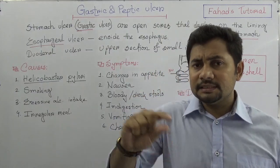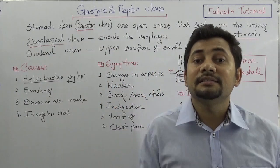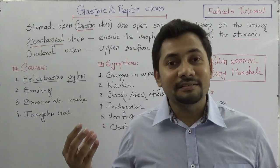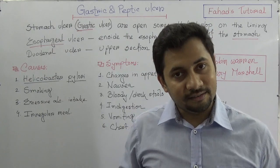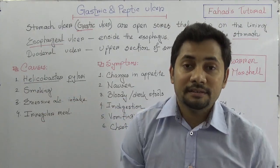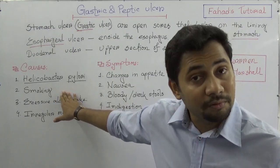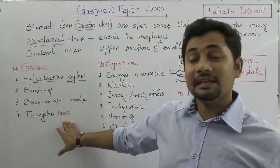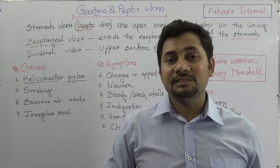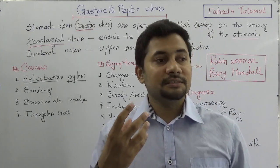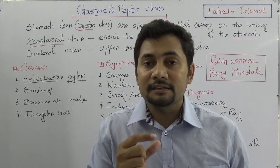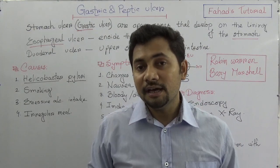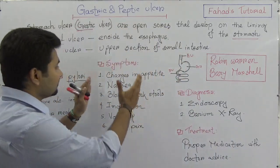This bacteria develops inside the stomach, esophagus, or duodenum and creates the ulcer. Based on the location, we name it duodenal, gastric, or esophageal ulcer. Helicobacter pylori is the main cause of peptic ulcer. Secondly, smoking is a common cause. Excessive alcohol intake, irregular meals, spicy meals, oily meals, and stimulating foods like coffee are also main reasons. Mostly, irregular meals, spicy meals, and Helicobacter pylori are the main reasons for peptic ulcer.